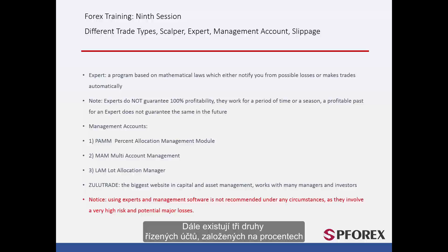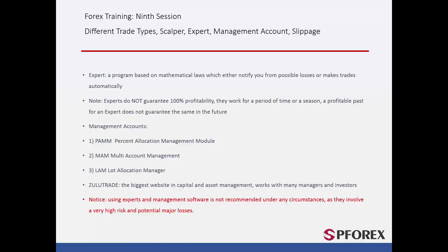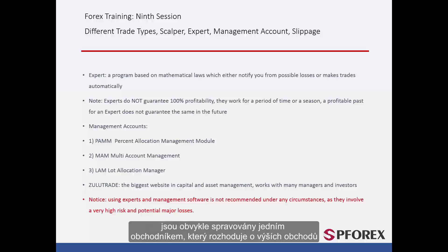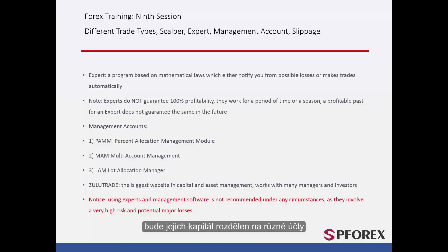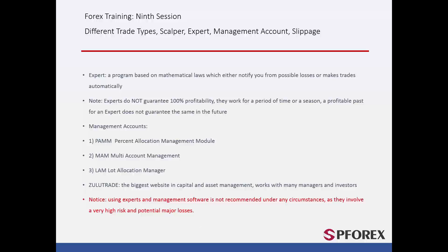Next, there are three management accounts. These are based on percentage. The first type is PAM or Percentage Allocation Management Module. PAM accounts, which are more recognisable with brokers, are usually handled by one manager who will decide the trade amount. Based on the amount they trade and the capital flow trusted to them by their followers, capital will be divided into different accounts. A follower can choose to invest a portion of their account, say 10% with one manager and another portion, say 20% with another manager.